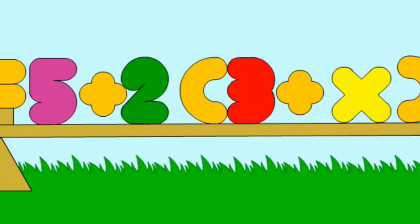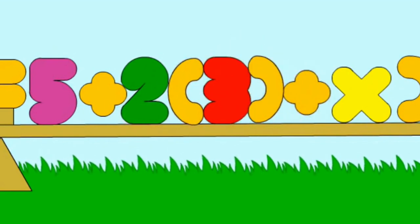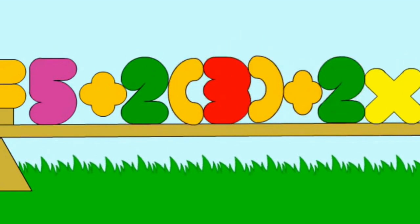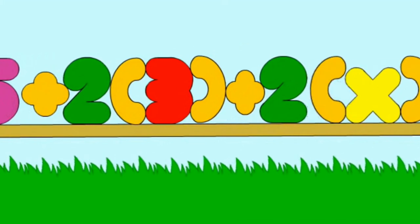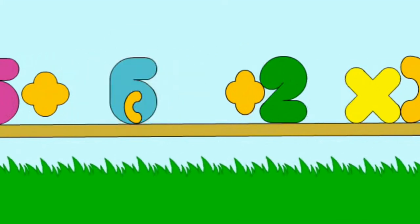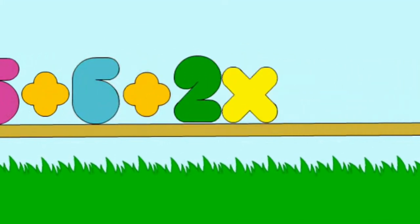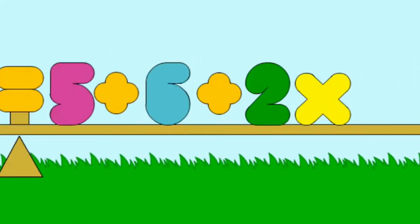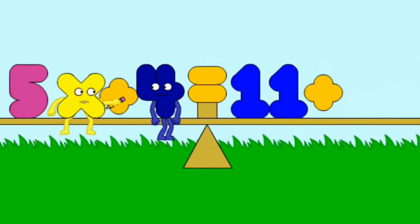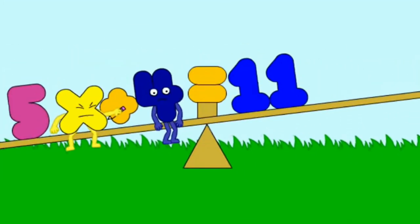Two times three plus two times x, which is six plus two x. x is five.